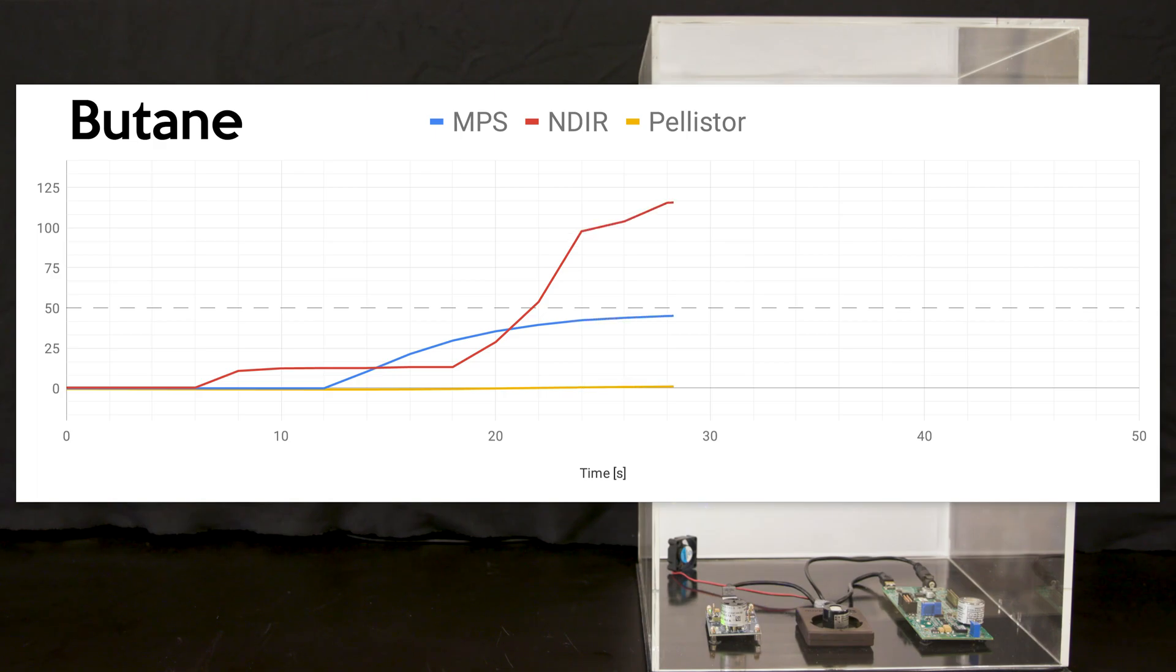The NPS is accurately reporting butane around 50% LEL, and it also accurately identifies it as a light gas.